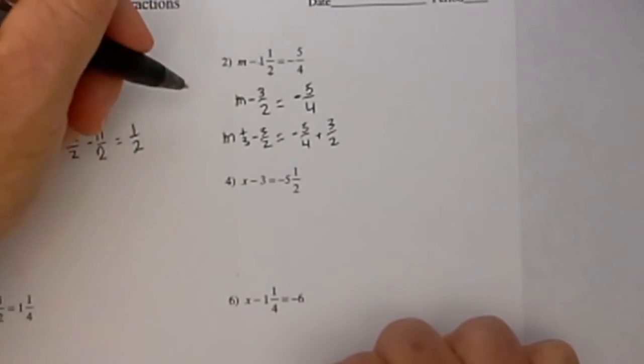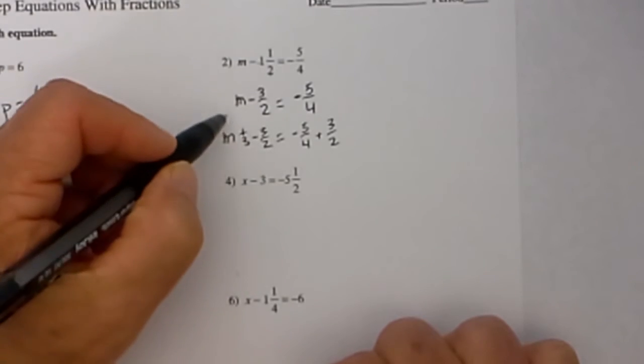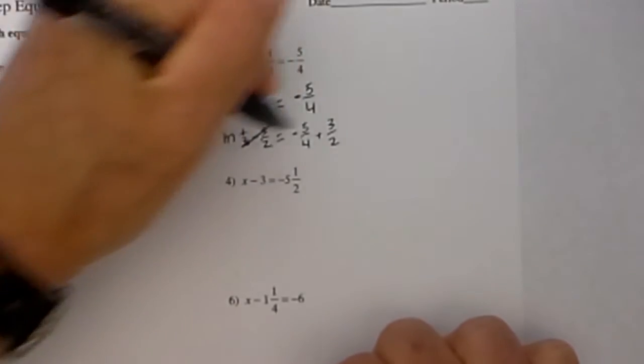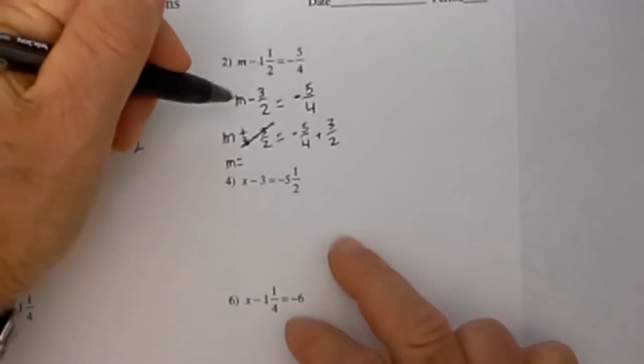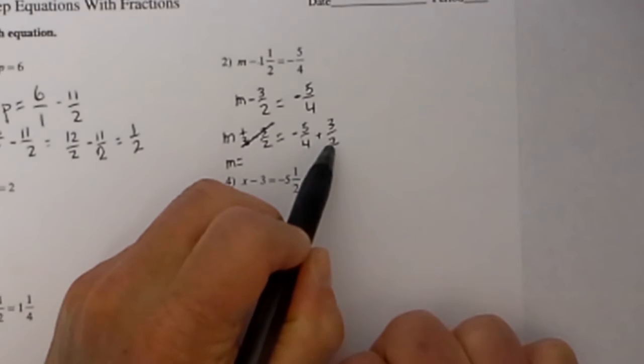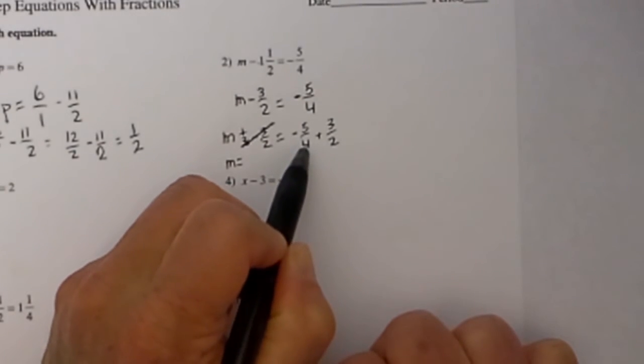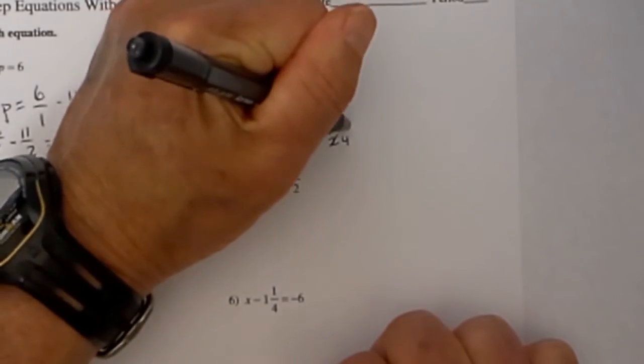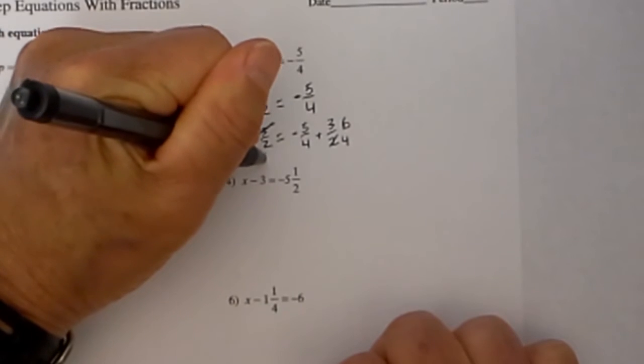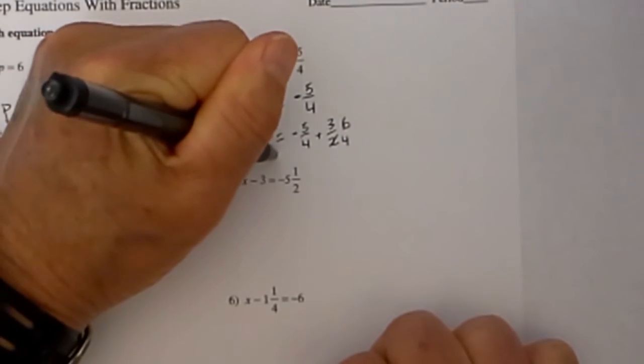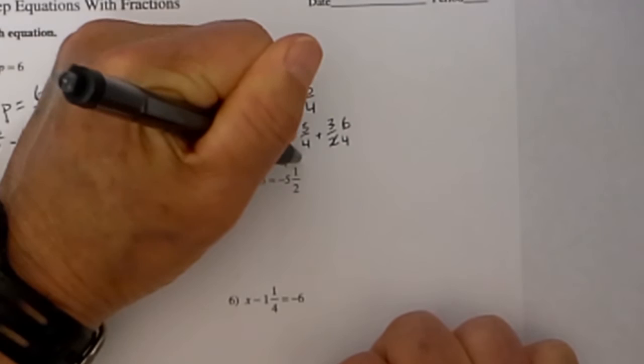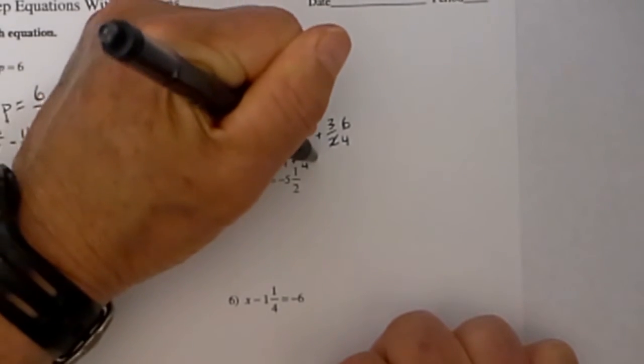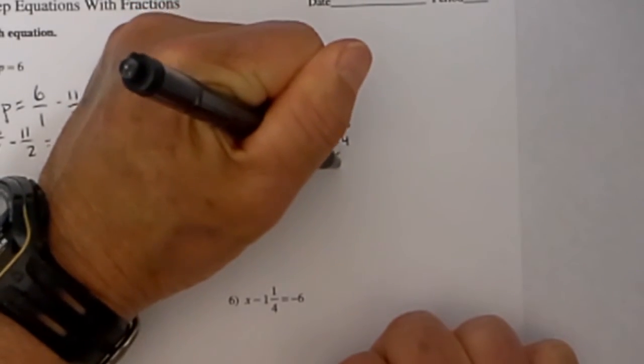These two cancel and so now I am left with m is equal to, I need to find a common denominator and 2 will go into 4 two times so this will become a 4 and 2 times 3 is 6. So I have negative 5 fourths plus 6 fourths and that ends up working out to be 1 fourth.